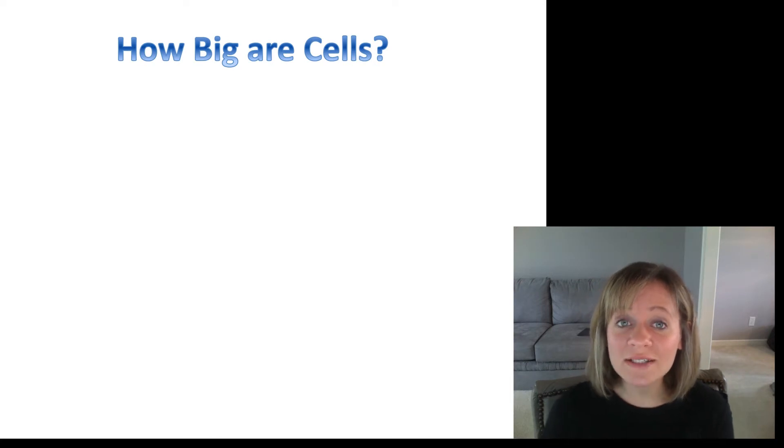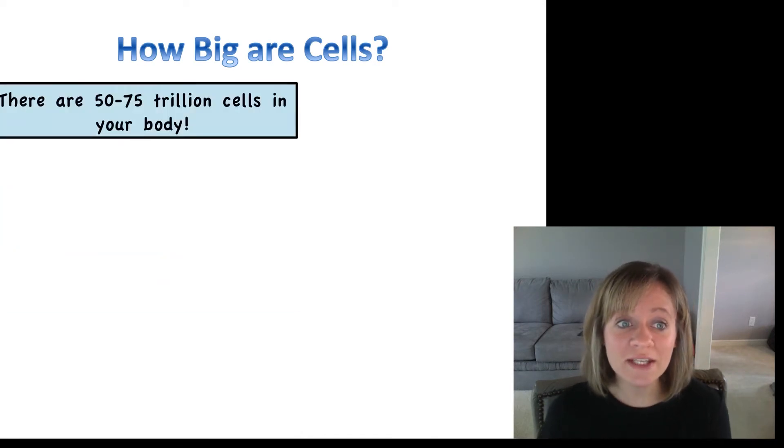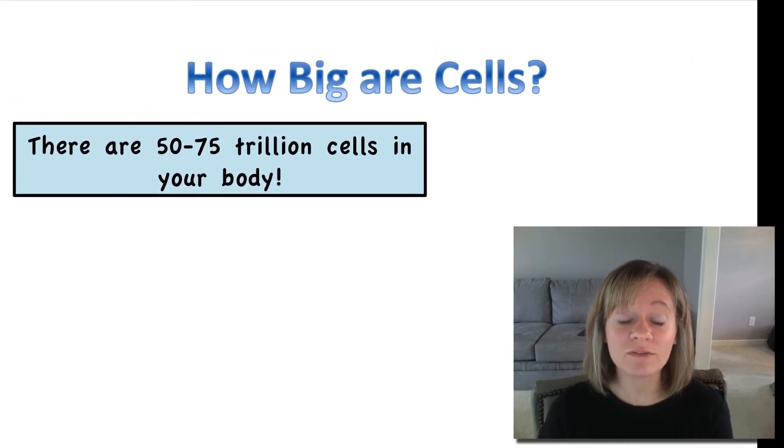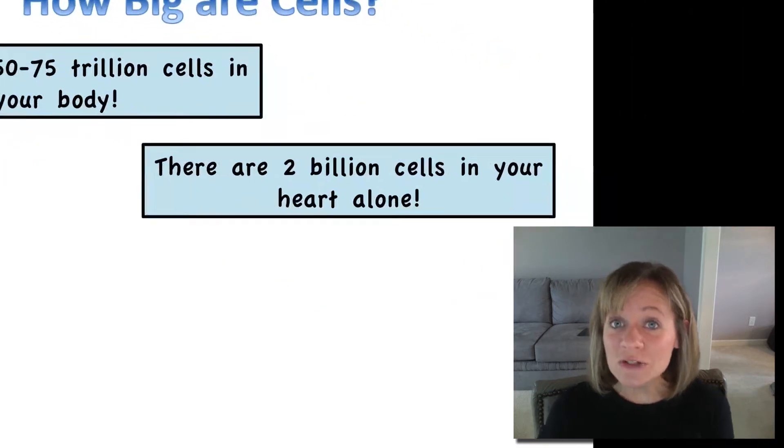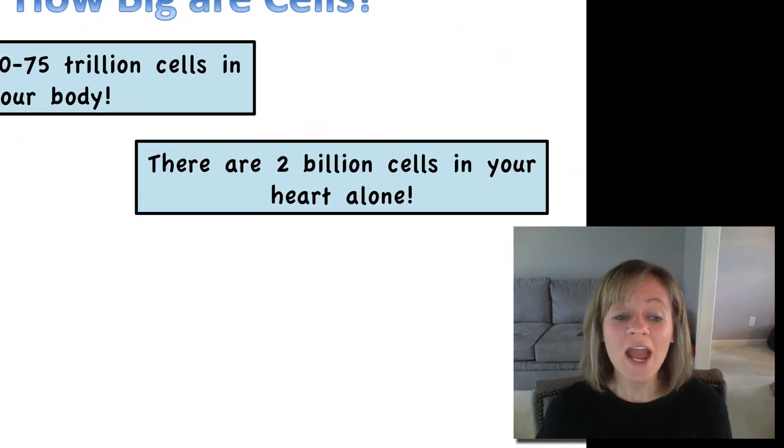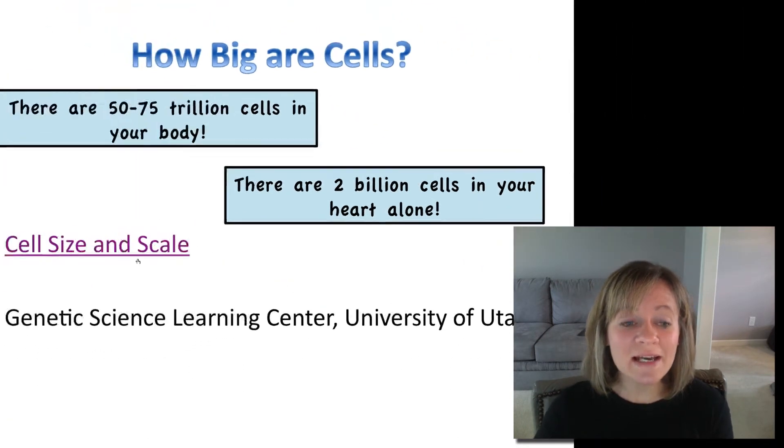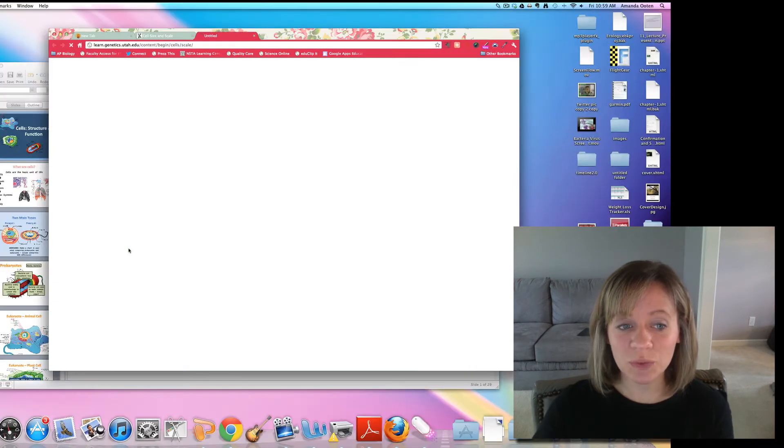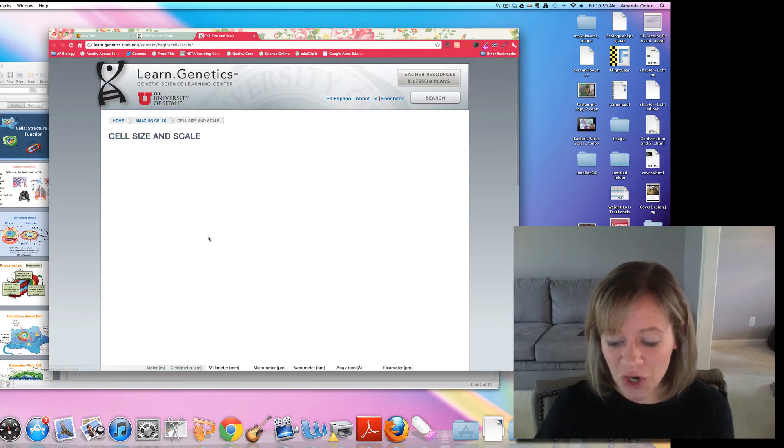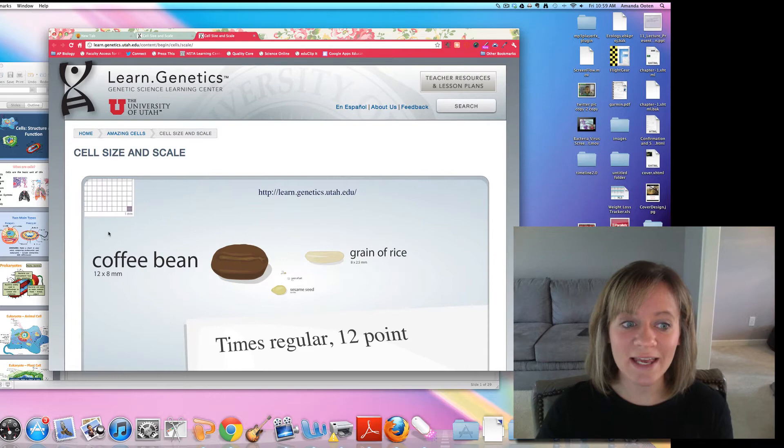Just how big are cells? To give you a little frame of reference, there are 50 to 75 trillion cells in your body. That is a lot of cells. Just in your heart, there are 2 billion cells alone. And I found this great little website that I'm going to take you to really quickly that really shows cell size and scale.